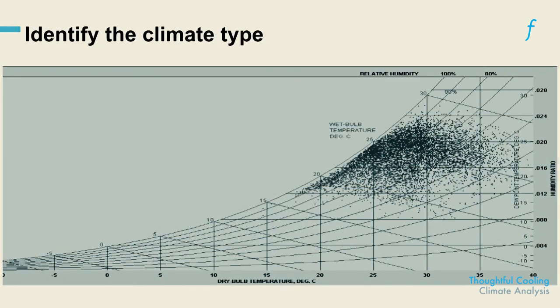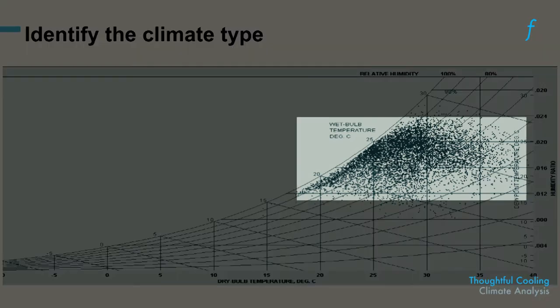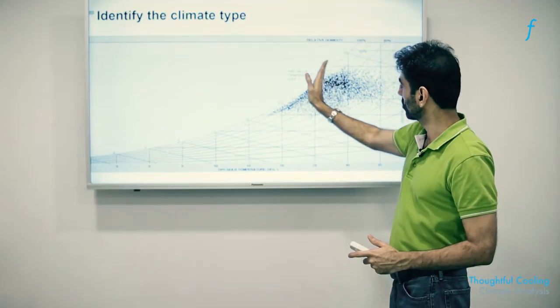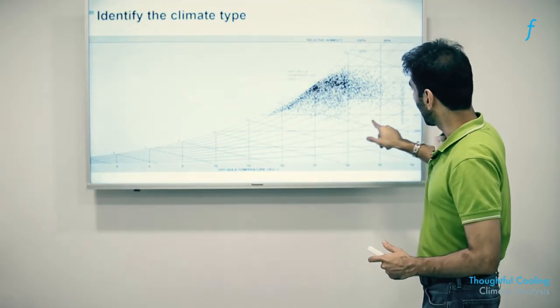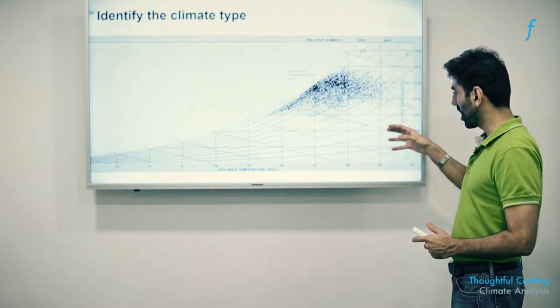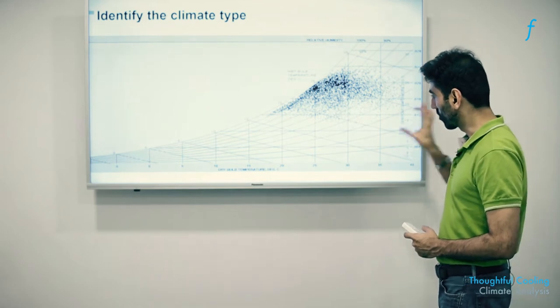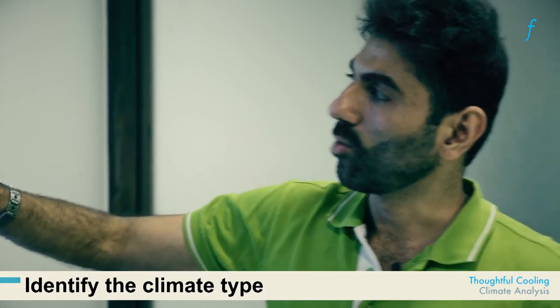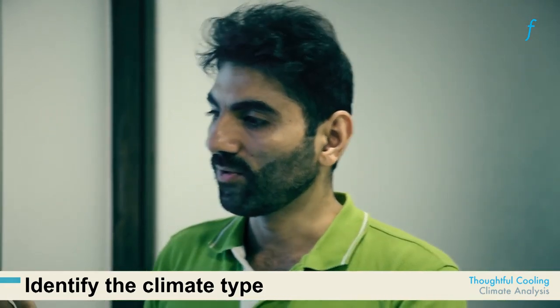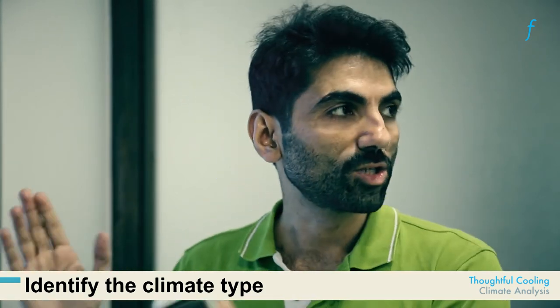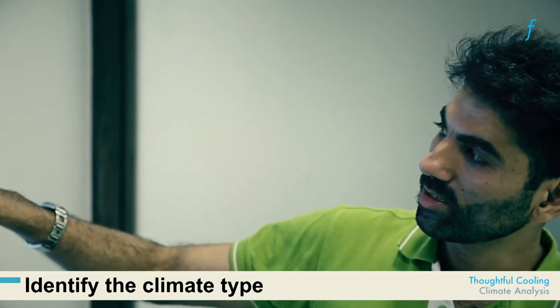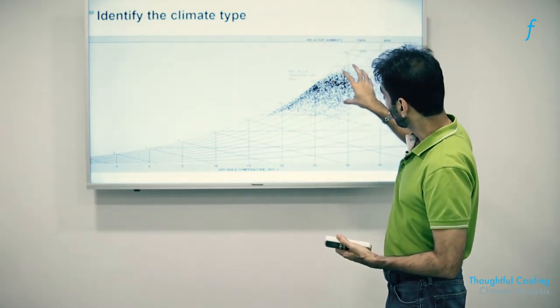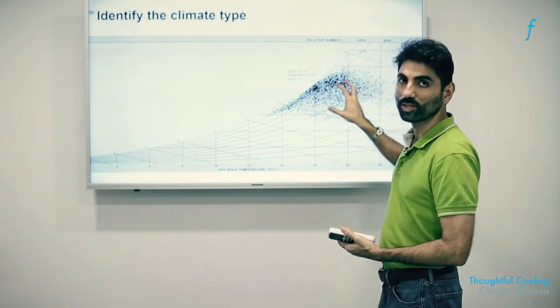So this is a chart which indicates a lot of clustering around the high humidity region which is close to the saturation line as you can see. Very few hours are present in this area which is the dry and hot part of the psychrometric chart. So of course this is not a hot and dry place. This is most likely a humid place, and whether it is a hot and humid or a warm and humid, we will only be able to detect once we see the corresponding charts for other regions. But most likely this is the chart for a warm and wet region of India.